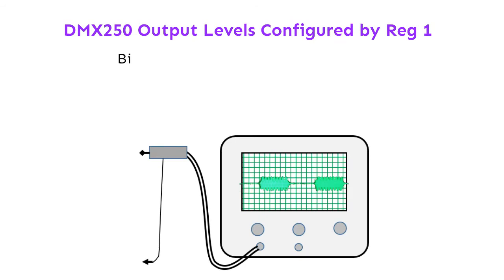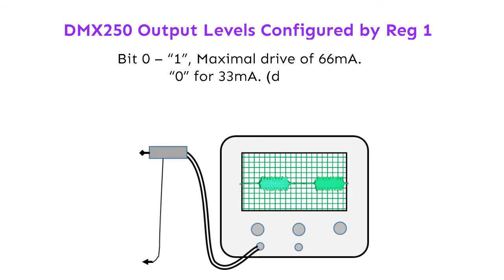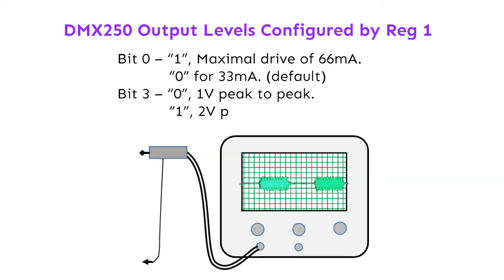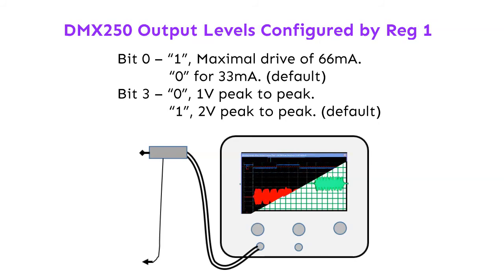Output levels are configured by reg 1. Bit 0 set to 1 gives a maximal drive of 66 mA; set to 0 gives 33 mA. Bit 3 set to 0 gives 1 volt peak to peak output; set to 1 gives 2 volts peak to peak.